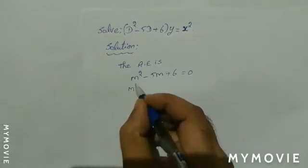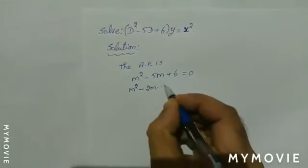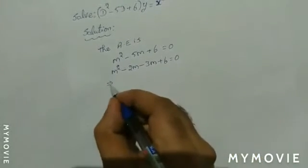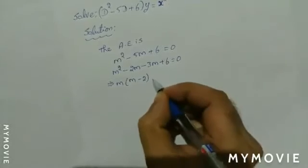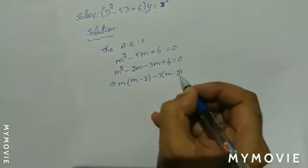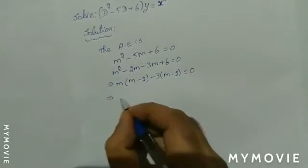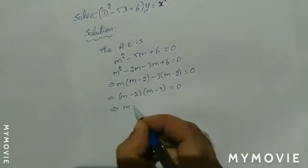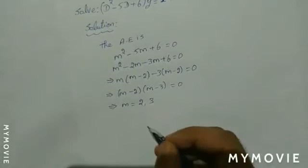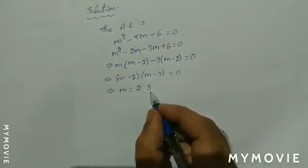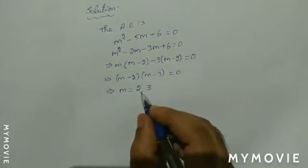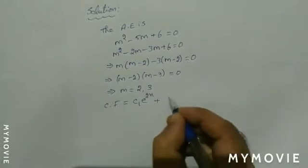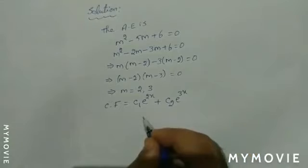So this can be written as m squared minus 2m minus 3m plus 6 equal to 0. This gives m(m minus 2) minus 3(m minus 2) equal to 0, which simplifies to (m minus 2)(m minus 3) equal to 0. From this we get m equal to 2 and m equal to 3. The roots are real and unequal, so the complementary function CF is equal to c1 times e raised to 2x plus c2 times e raised to 3x.